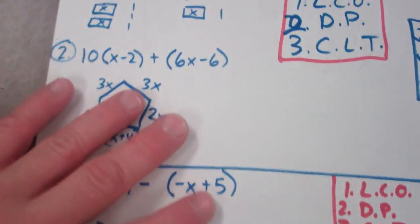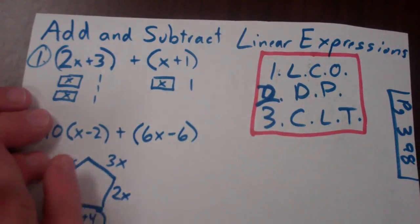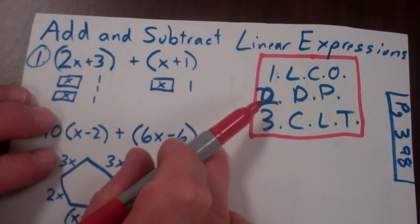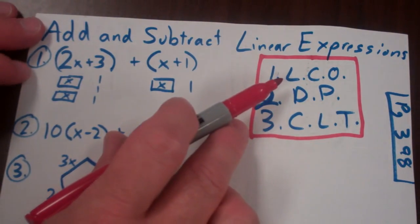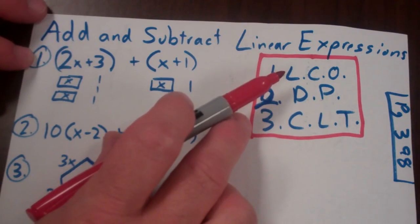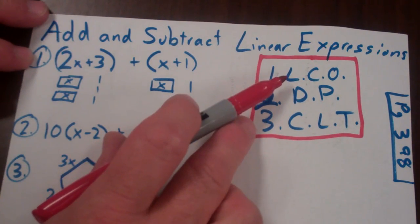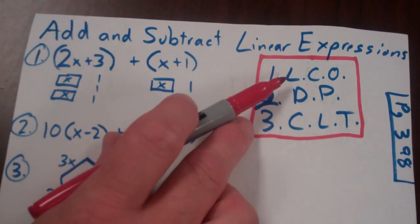Alright, so if I wanted to add and subtract linear expressions, the three steps that you're going to hear me talking about throughout algebraic expressions and equations: leave change opposite to get rid of all subtraction. We do that for a couple reasons.